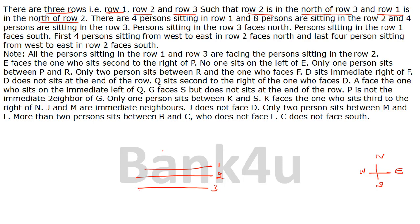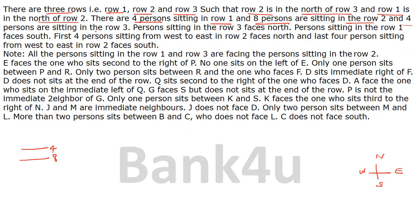Row 1 is above, row 2 is in the middle, and row 3 is at the bottom. There are 4 persons sitting in row 1, 8 persons sitting in row 2, and 4 persons sitting in row 3. The persons sitting in row 3 face north direction.